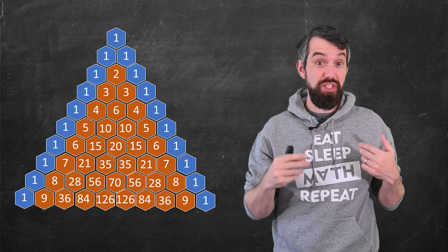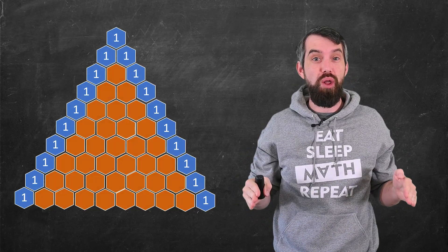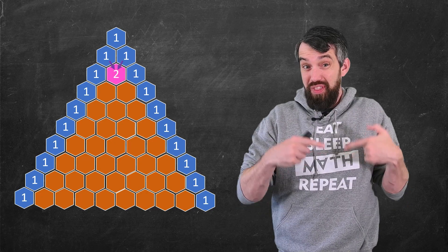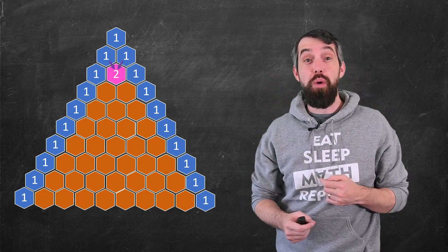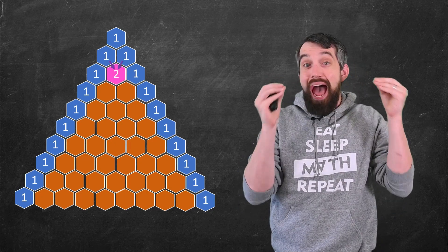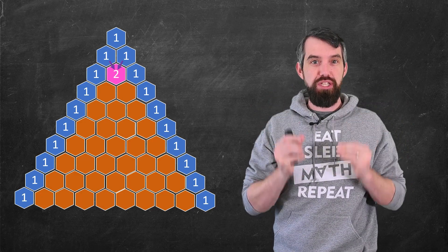This is Pascal's triangle. It's created by putting 1s all along the outside of the triangle, and then for the inside, like for example this pink one up here at the top, you're going to add up the values directly above it. 1 plus 1 is equal to 2.